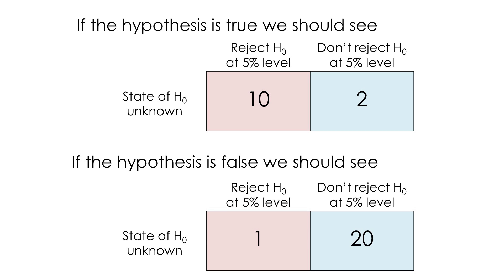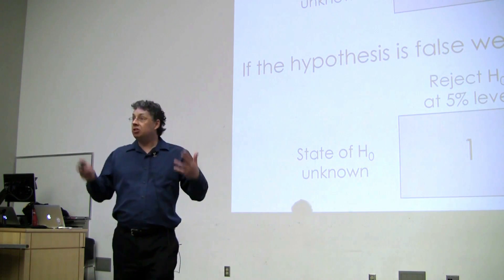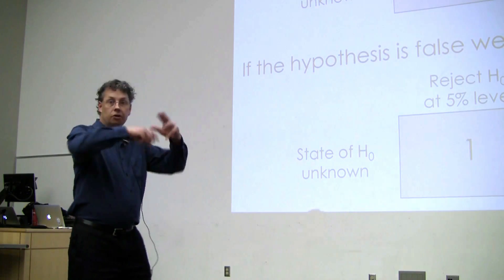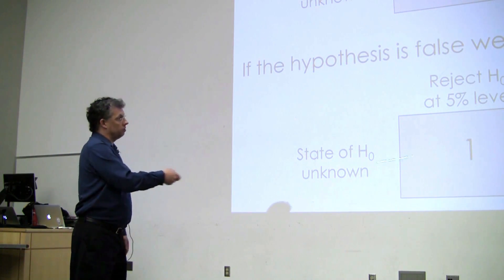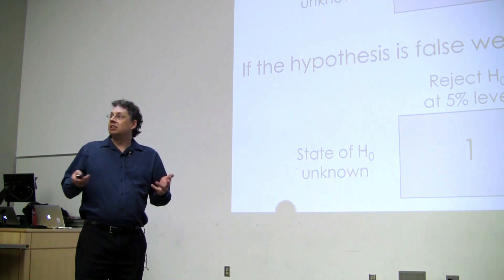So if the null hypothesis is false and we can reject it, then we might expect to see something like this. We see 10 studies that reject it and two that fail. My experiment is not super high powered, so I'm going to miss a few. If it's false, we should see kind of the reverse. At a 5% level, we should see approximately 19 or 20 over here where we don't reject it and maybe one where we reject it by mistake. And so in principle, we should be able to look at the literature, look at a series of papers and say, oh, we're clearly in this domain or we're clearly in that domain. Make sense?